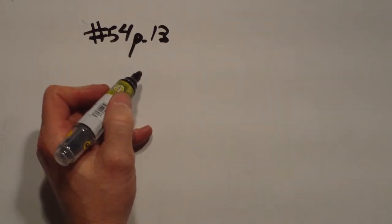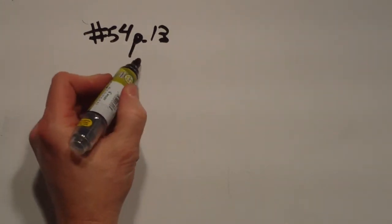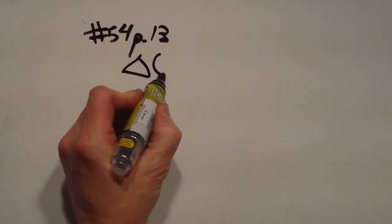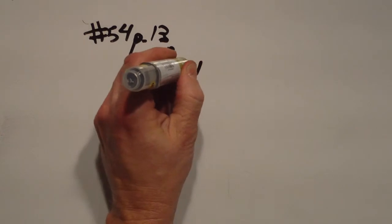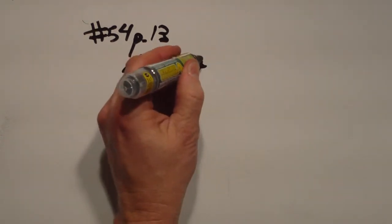A certain reaction is non-spontaneous under standard conditions. Under standard conditions, that means the little symbol there, G, delta G is positive. That's what it says.